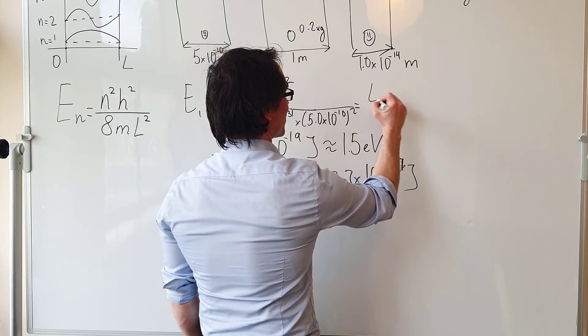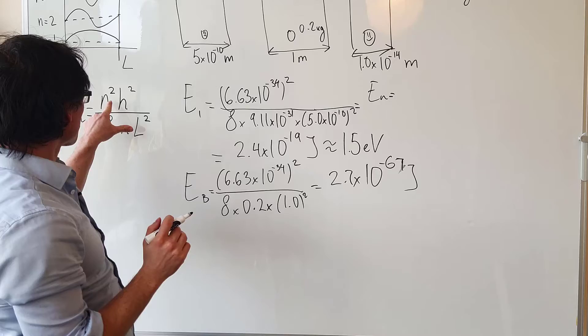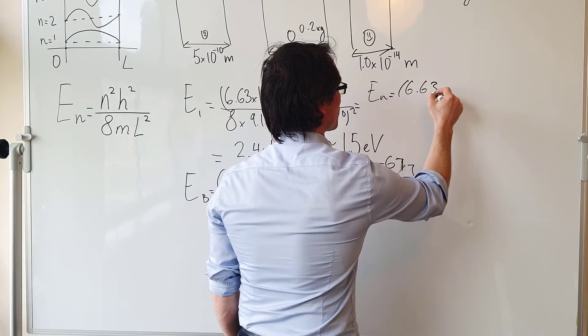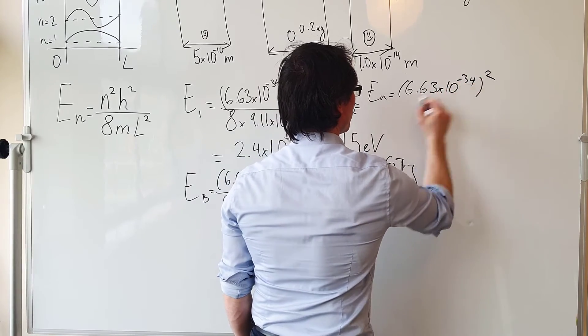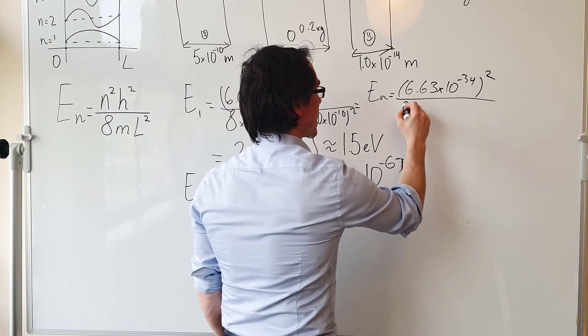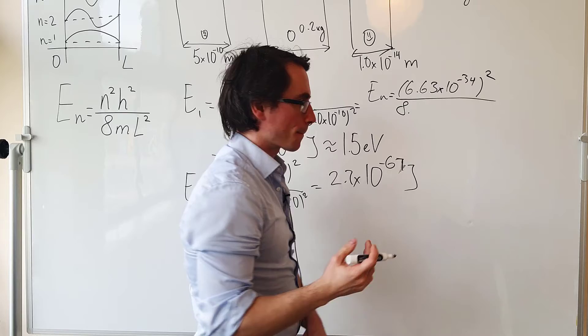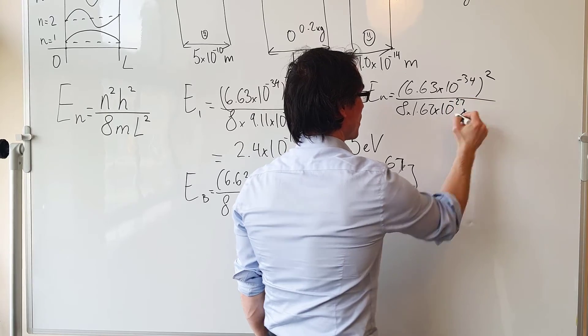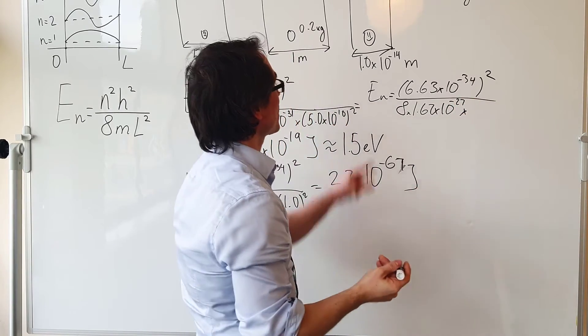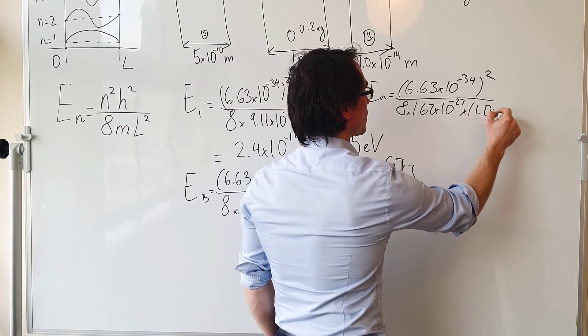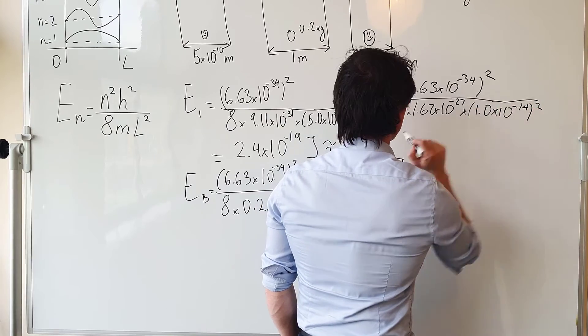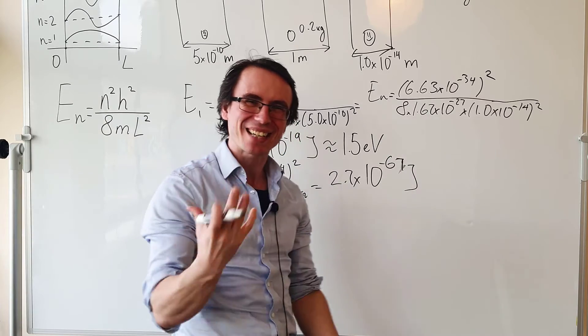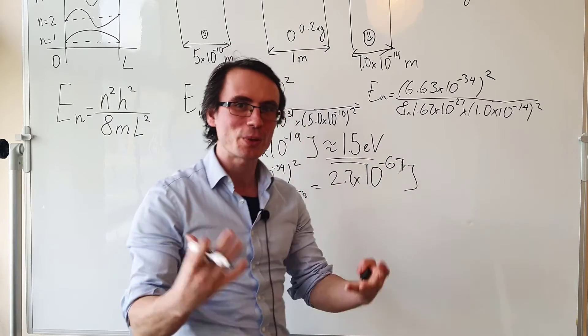Using the formula, remember n equals 1 for our lowest energy state, so we're going to square Planck's constant, which is 6.63 times 10 to the power of minus 34. This is squared, and then we're dividing that by 8 times the mass of the particle, which is 1.67 times 10 to the power of minus 27, and let's square the size of the box, which is about 1.0 times 10 to the power of minus 14 squared. Just to get our answer in electron volts, which is going to give us a more intuitive sense for our answer...